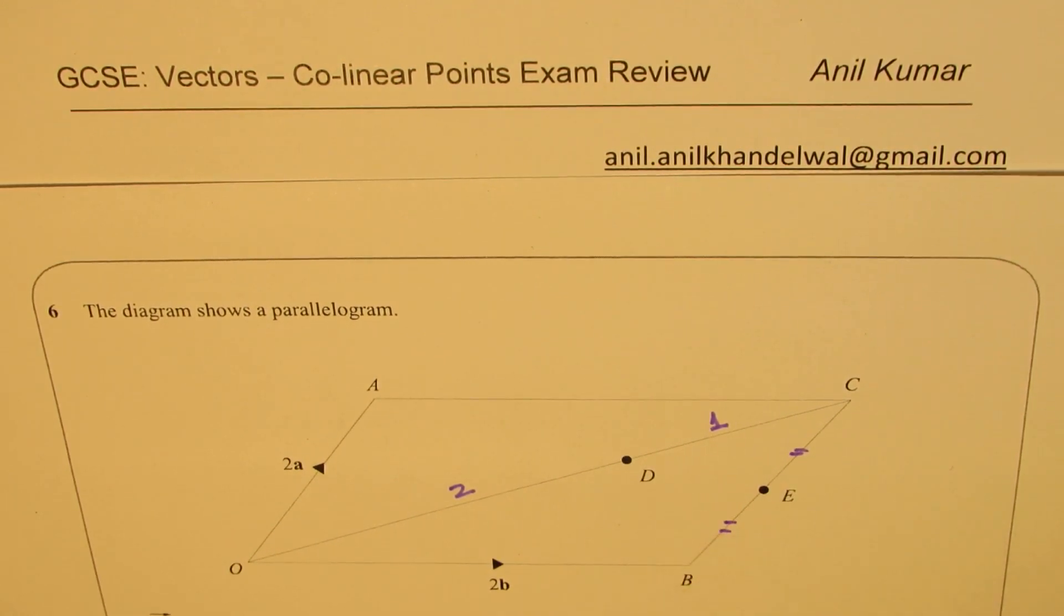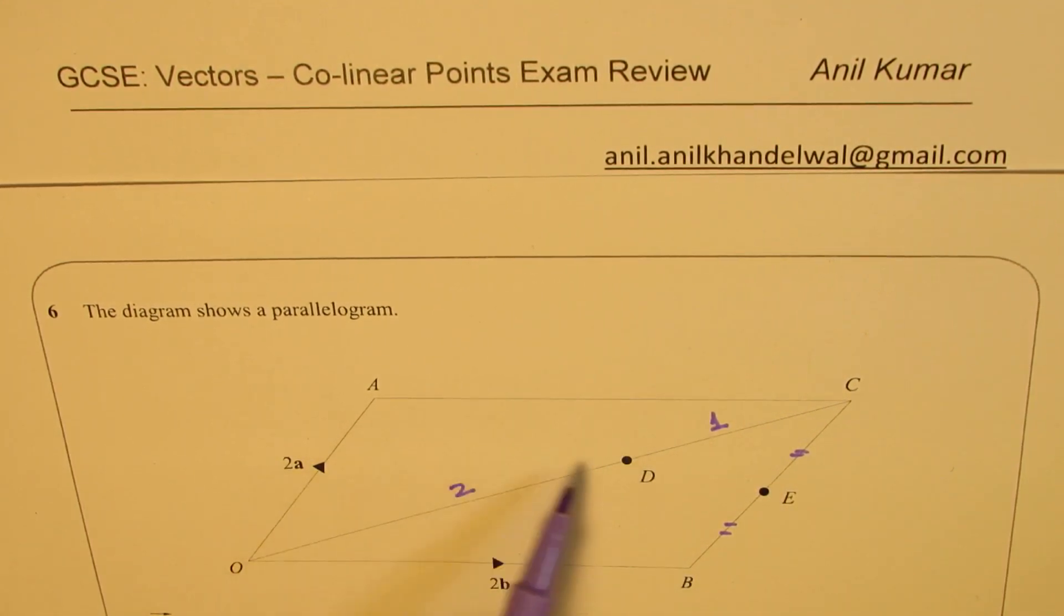These two sides are equal. Show that A, D, E are on the same straight line. So we need to show that if I connect A with D and E, it is a straight line. So that is what we need to show in this particular example. All right. Let us see how to do it.